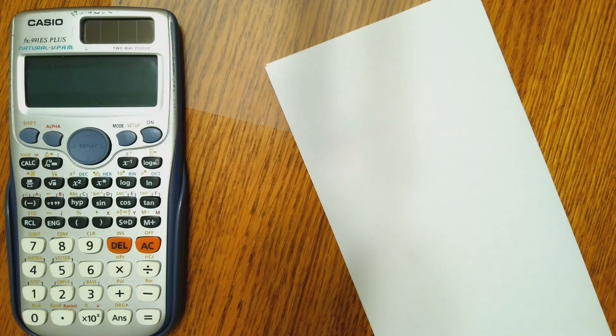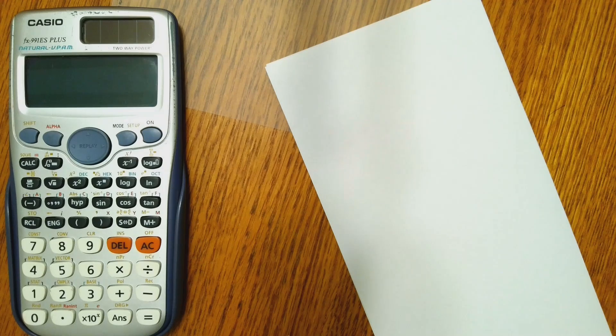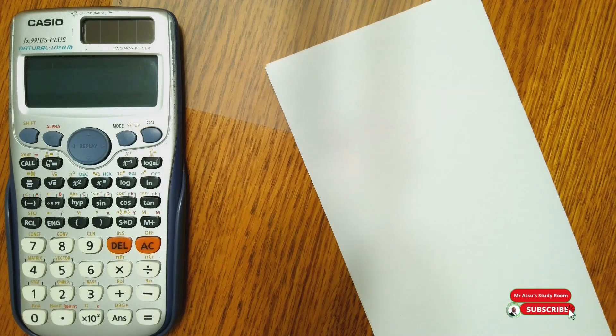Hello, my name is Mr. Chonyo. Welcome to my study room. Today, we are using the Casio FX991 ES Plus calculator to find the highest common factor, HCF, or some call it greatest common factor, GCF, and then least common multiple, LCM, or some call it lowest common multiple, of two numbers. Kindly join me as we do that.